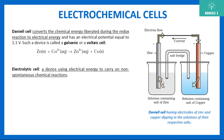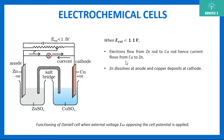Zinc is getting converted into Zn²⁺ and is losing electrons — zinc gives Zn²⁺ plus two electrons. So electrons are going towards copper, which means current is flowing from copper towards zinc. Since they are in separate containers, they are connected via a salt bridge.